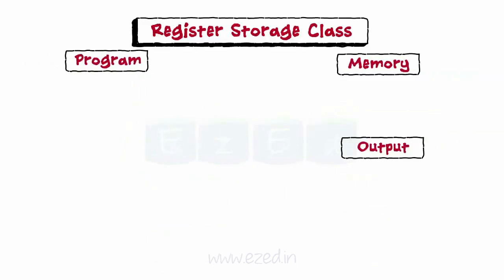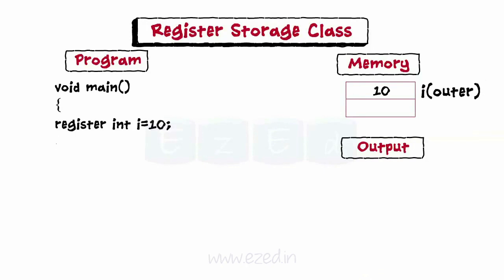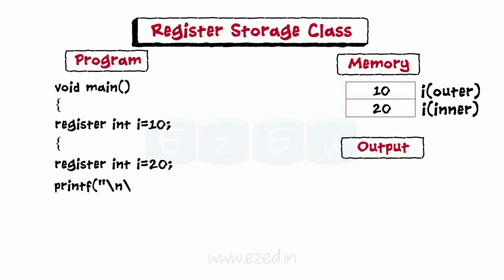Write a program to demonstrate the use of register storage class. Variable i is declared as register and assigned the value 10. Inside an inner block, i is declared again and assigned 20. When we print it there, the value is displayed as 20. When we print i outside the block, it is printed as 10.